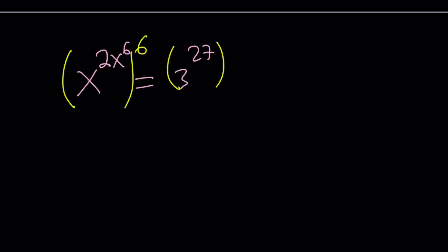We're going to raise both sides to the power of 3. From here, we get the following: 2 times 3 is 6. So, x to the power of 6x to the 6 equals 3 to the power of 27 to the 3rd. The exponents are multiplied, and we get 3 to the power of 81.